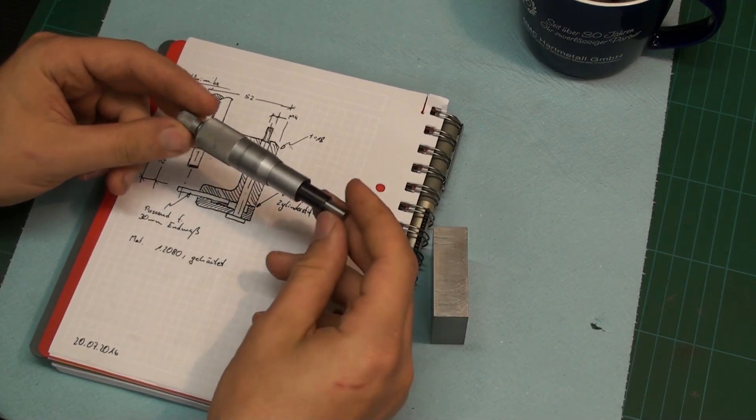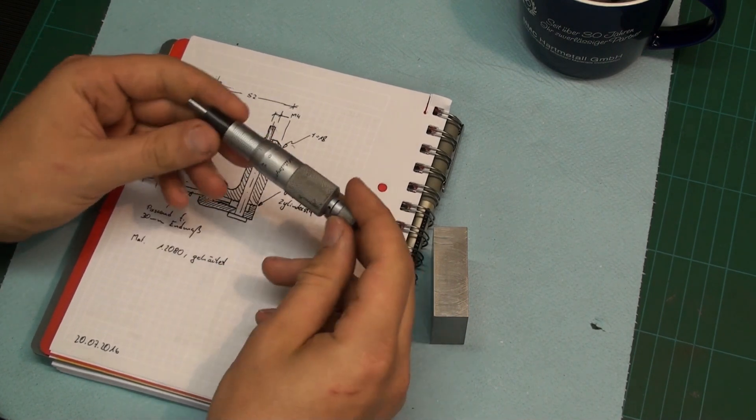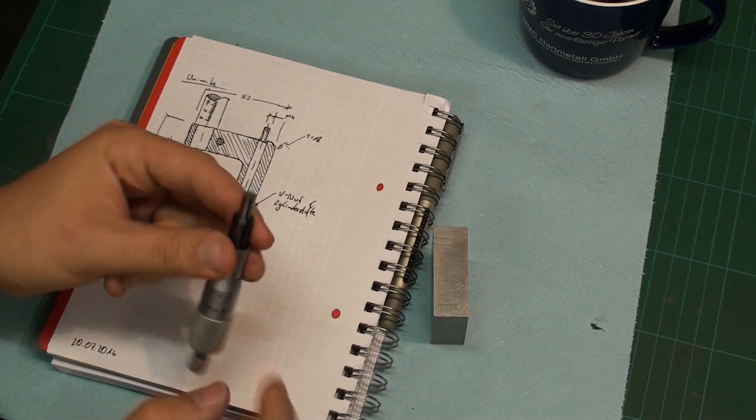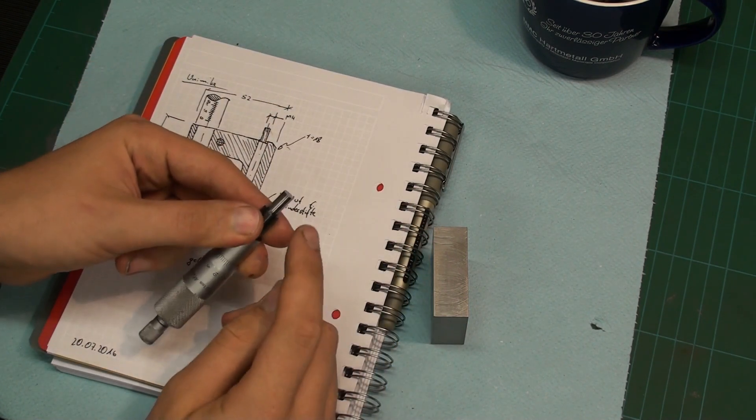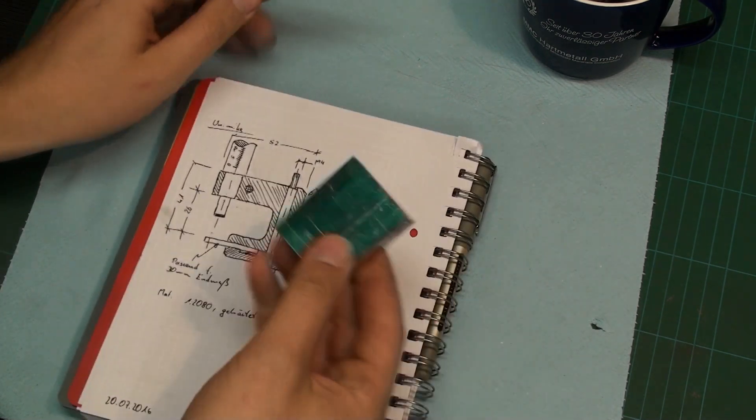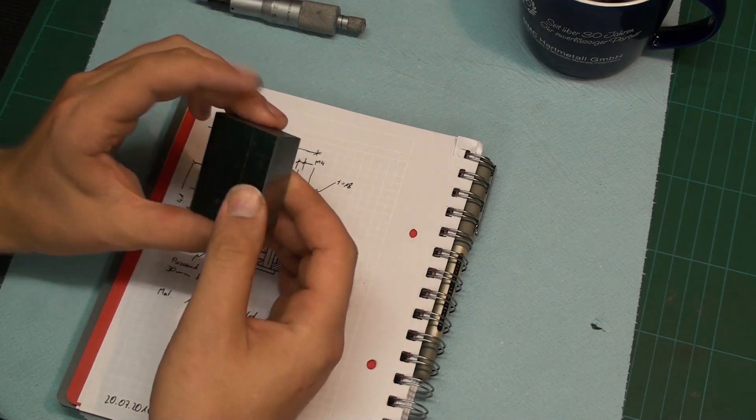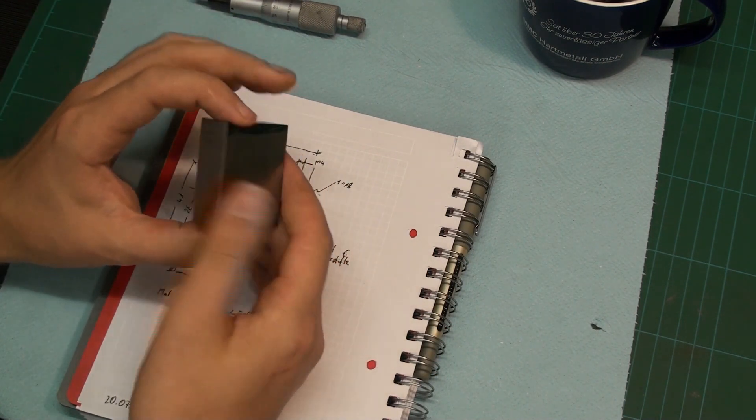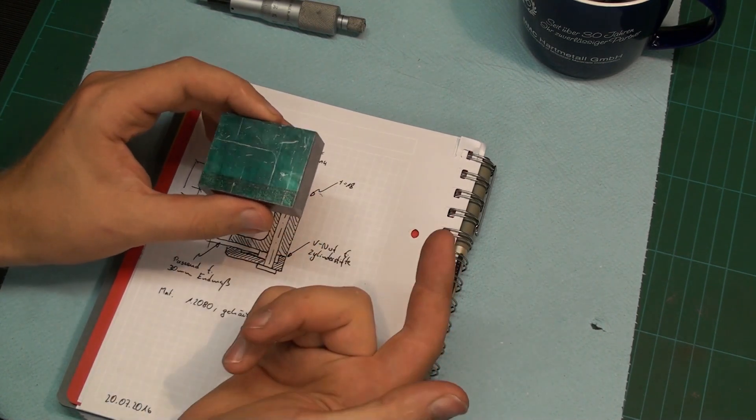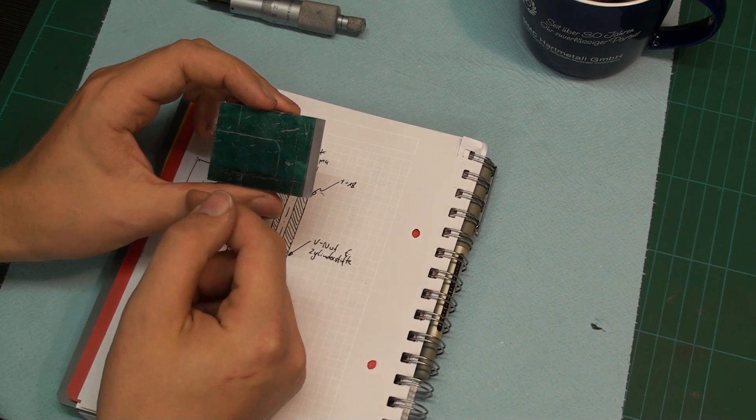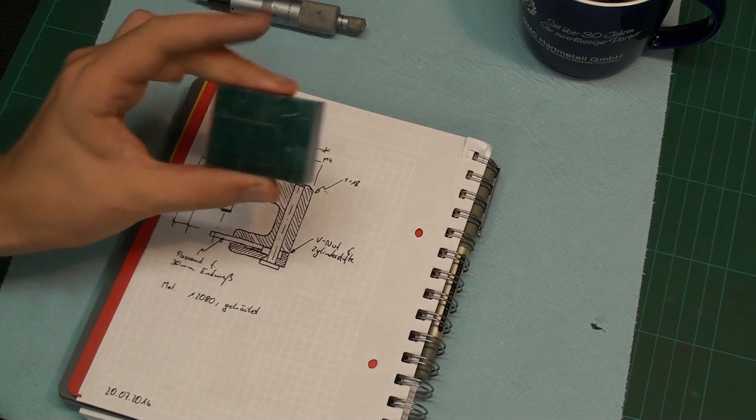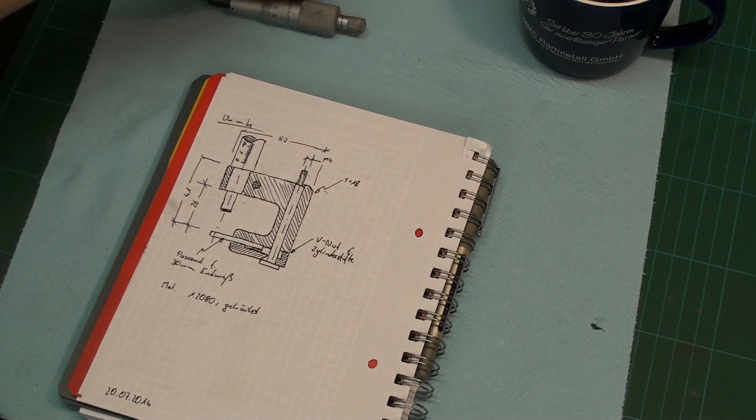From a friend I got a 0 to 25 millimeter Mitutoyo micrometer barrel. This is in pretty good shape, it's carbide faced, so that's good. And that's what we're going to use. I have a piece of 120-80 tool steel. That's some gnarly tool steel. This stuff has 2% carbon and 12% chrome in it, and yeah, this is some evil stuff.